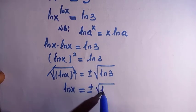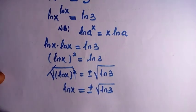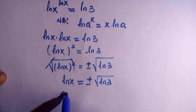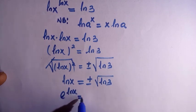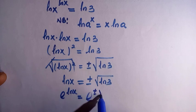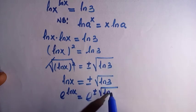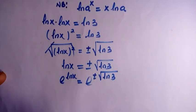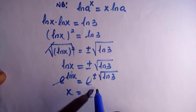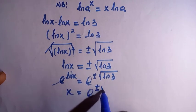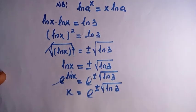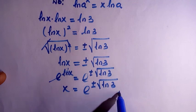We are looking for x, but this is attached to ln, so we introduce exponential because ln and exponential are inverse. They cancel each other, so we have x equals to e^(±√ln 3). This is the answer for the value of x.